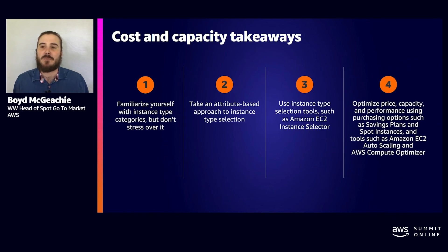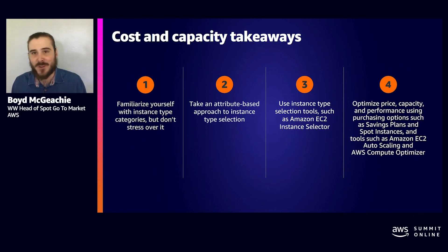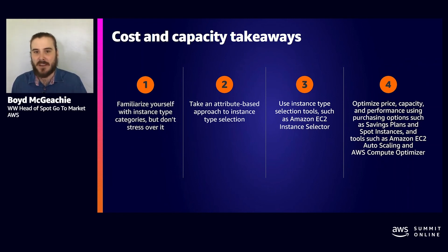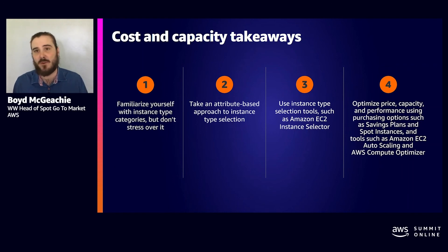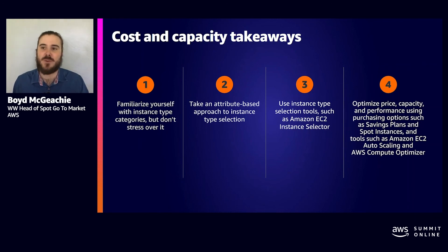Let's wrap up with the key takeaways. Familiarize yourself with the instance categories but don't overstress about it — you pay by the second, you can swap instance types with Compute Savings Plans, and you can be saving money while continuing to find the best instance type. Start from your attributes and work backwards to the EC2 instance types available — don't go look at the list of 400 and try to work out which to pick. Use the selection tools to automate that based on your performance characteristics. After you've done all that, then is the time to start optimizing price, capacity, and performance with the different purchase options and tools like the AWS Compute Optimizer.